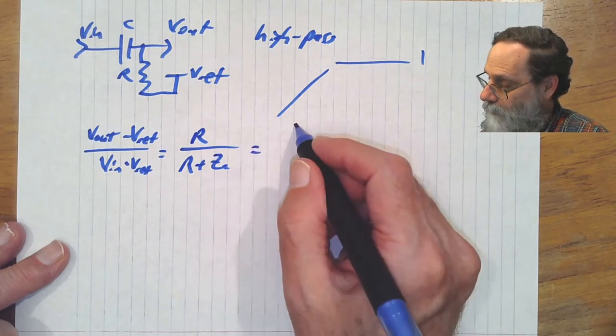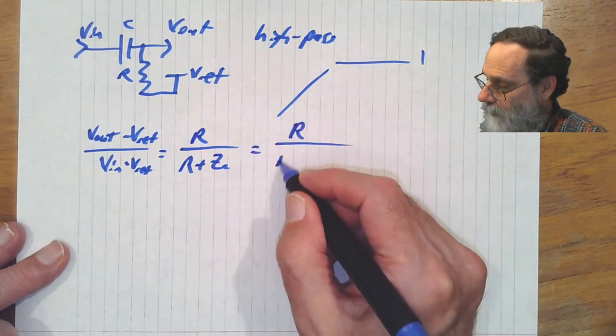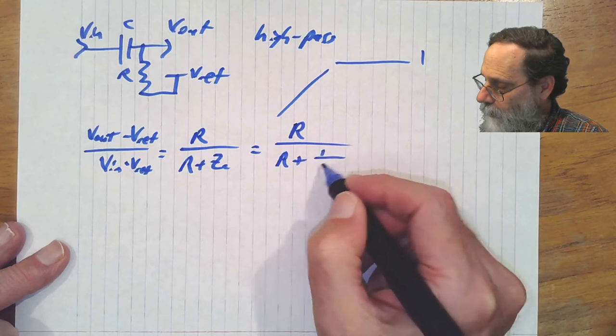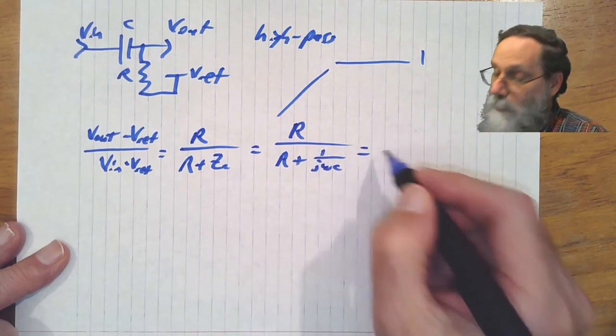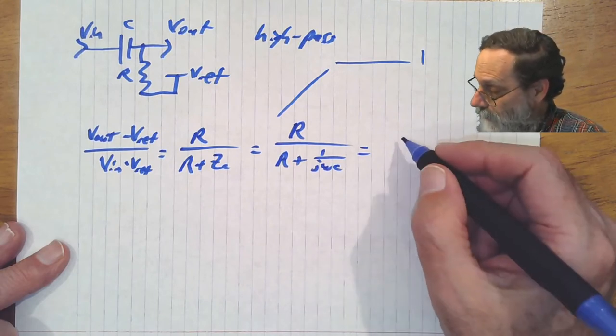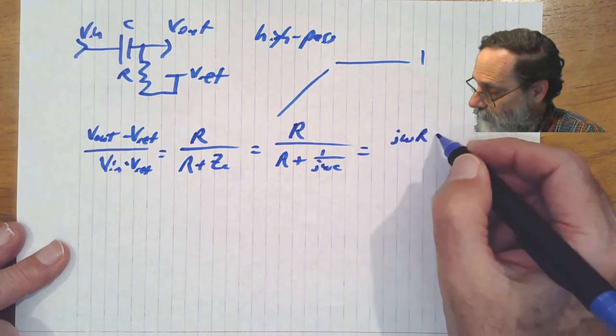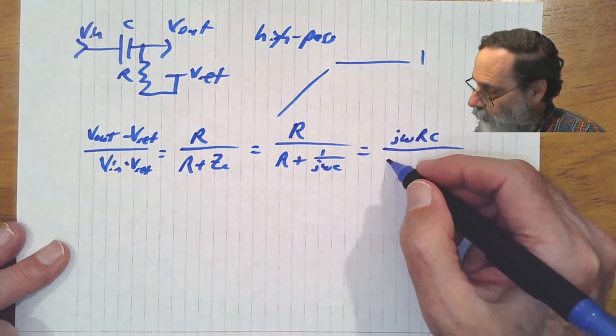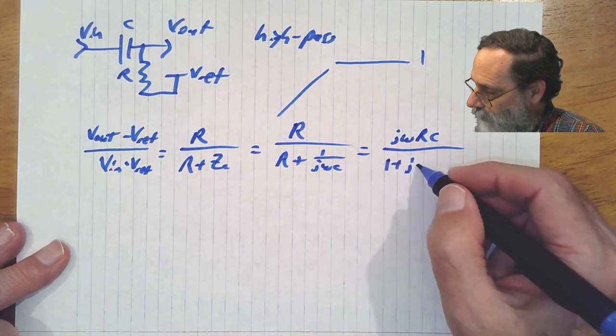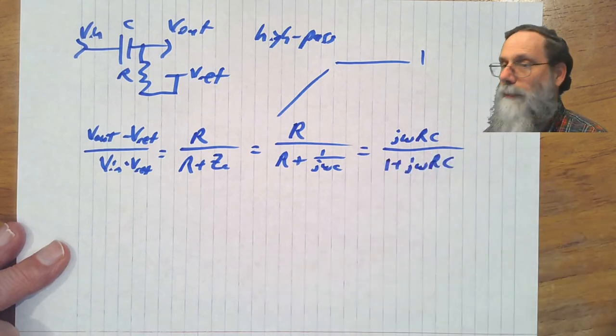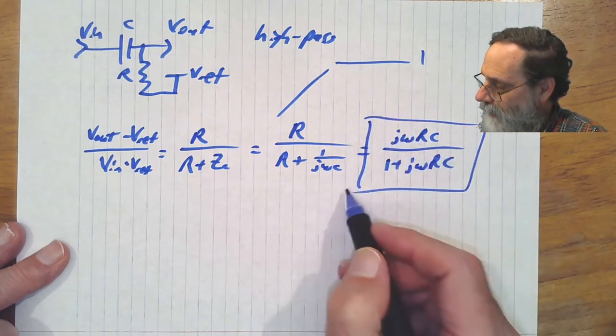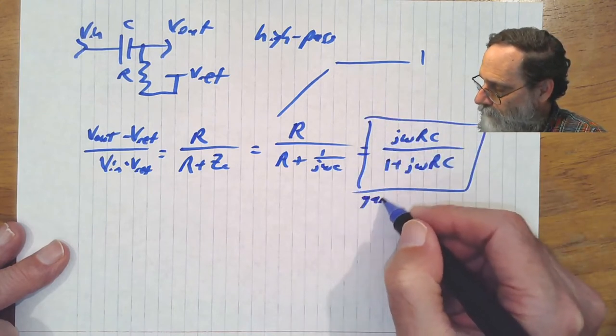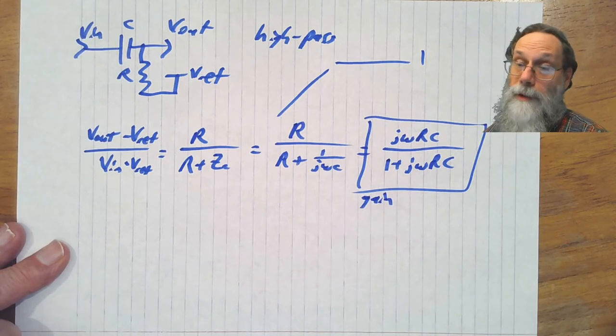We've got R on the bottom and R plus Zc for the total. And again, we can replace the Zc with 1 over jωC. And again, we can multiply top and bottom by jωC to get that this is jωRC over 1 plus jωRC. And that is the gain of this high-pass filter.